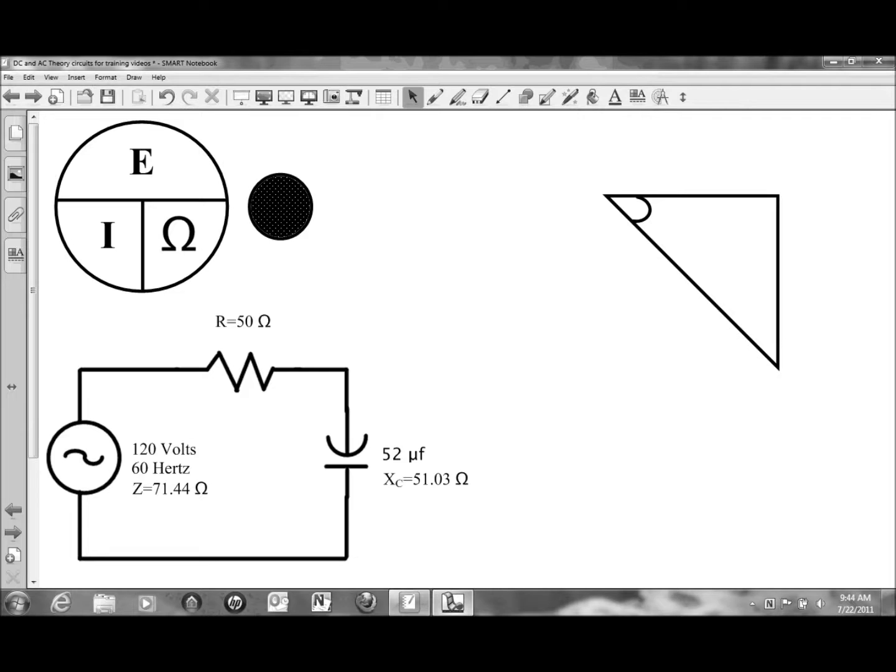At this particular time, we have solved for capacitive reactance and used that value combined with resistance and solved for impedance. And now that we have the total opposition of current flow in the series circuit, we can use that value and solve for total current.